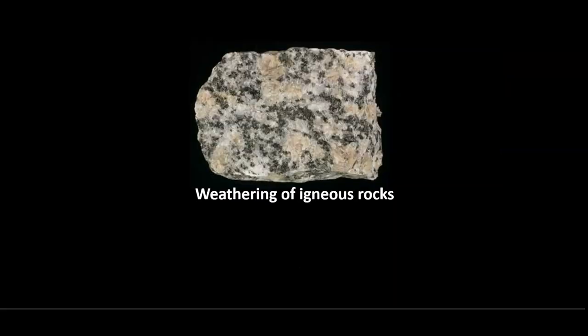Think about these categories and why they make sense. Think about what we talked about with the weathering of igneous rocks and the weathering byproducts. In front of you is a granite. You can see potassium feldspar, quartz, and some kind of black mineral, probably biotite.